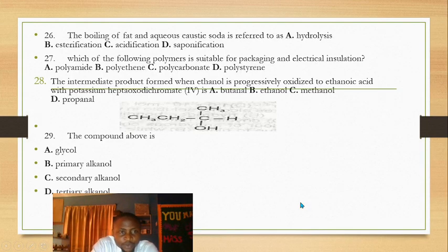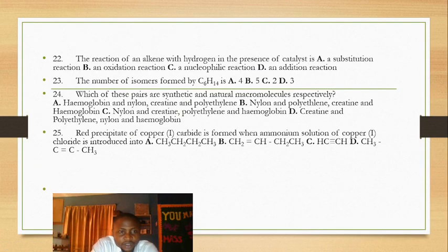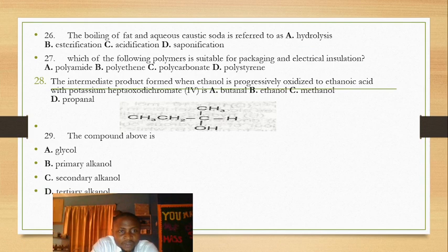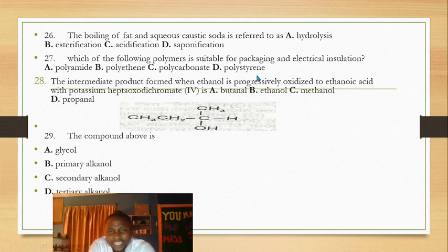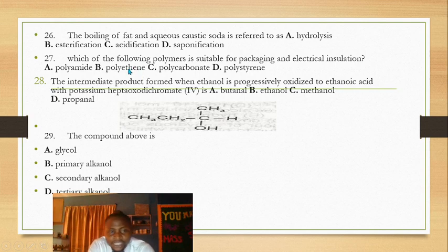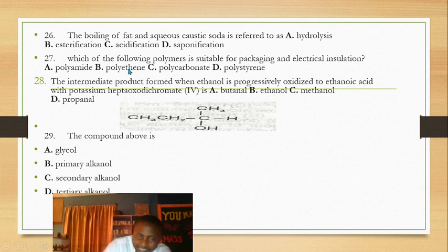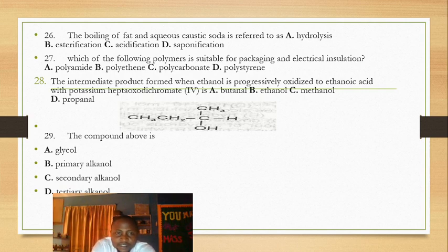The polymer suitable for packaging and electrical insulation is polyethene — also called polythene or polyethylene. These two names can be used interchangeably.